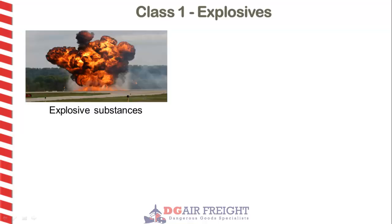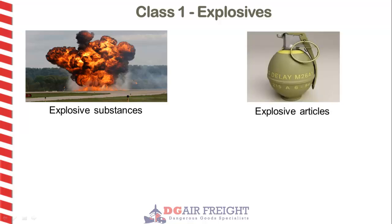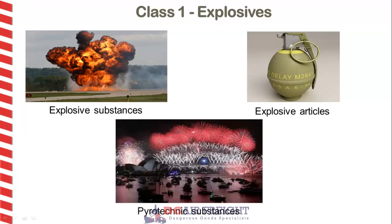Class 1 is made up of explosive substances, explosive articles that contain one or more explosive substances, and pyrotechnic substances. An explosive contains a great amount of potential energy. They can be solid or liquid, capable of a chemical reaction that creates a sudden expansion of its material after initiation. This is usually accompanied by the production of light, heat, sound and pressure.